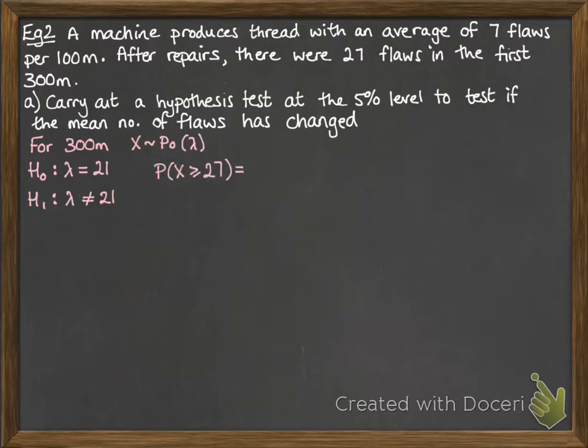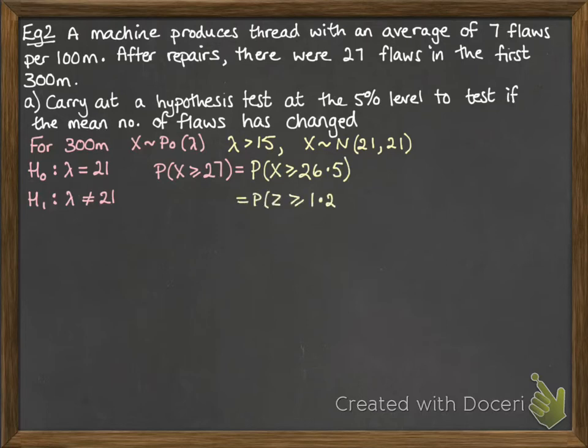So with our null hypothesis being 21, the probability that x is greater than or equal to 27 would be calculated by using a normal approximation. Since lambda is more than 15, we can use the normal approximation to the Poisson distribution. We don't want to add up all of the values from 27 upwards. So we can use this normal approximation, and we need to apply a continuity correction to it.